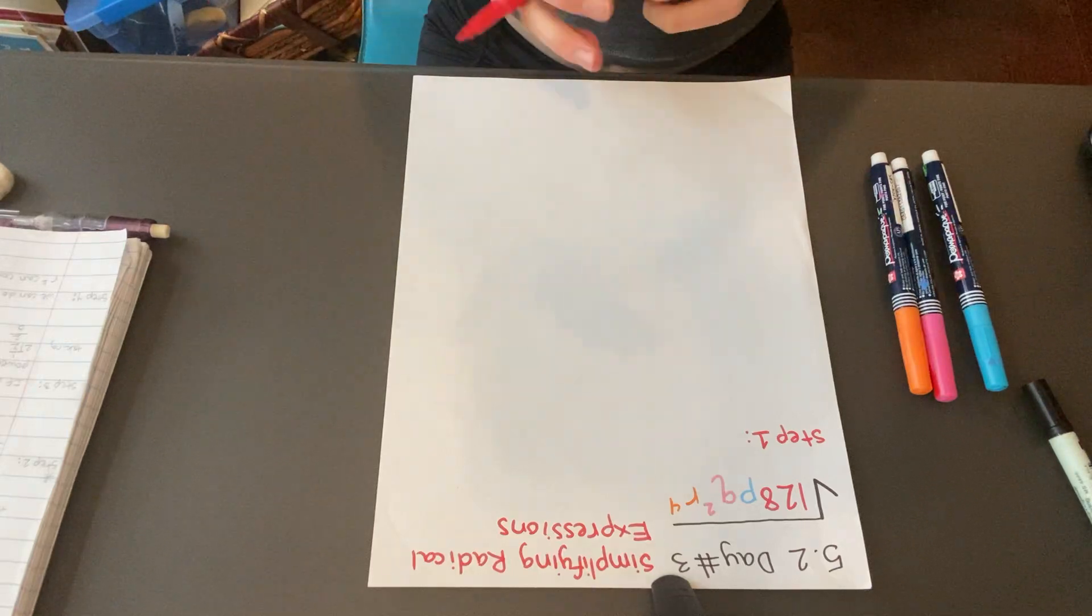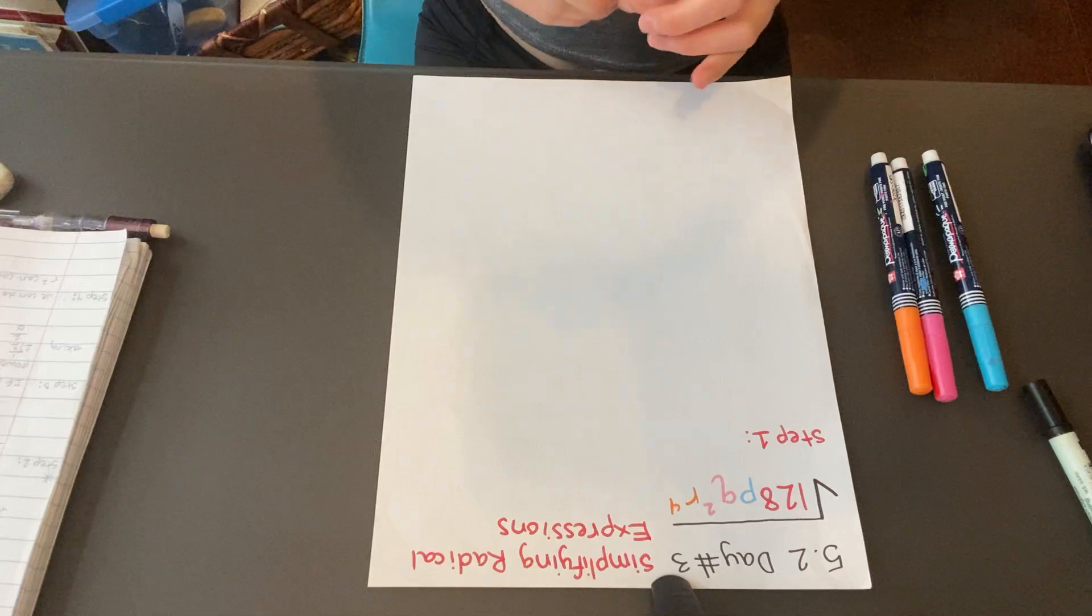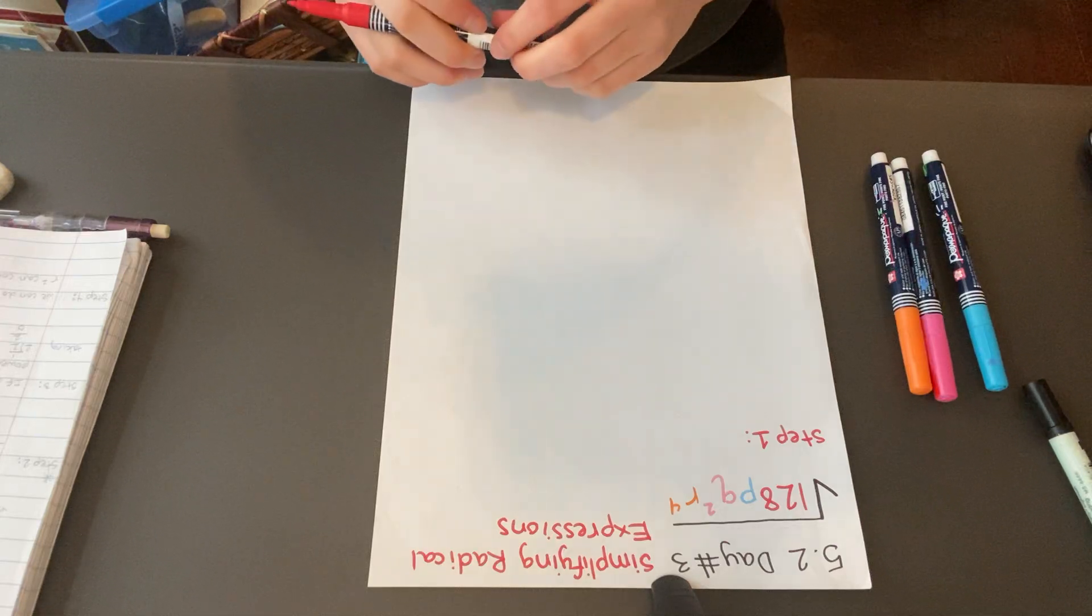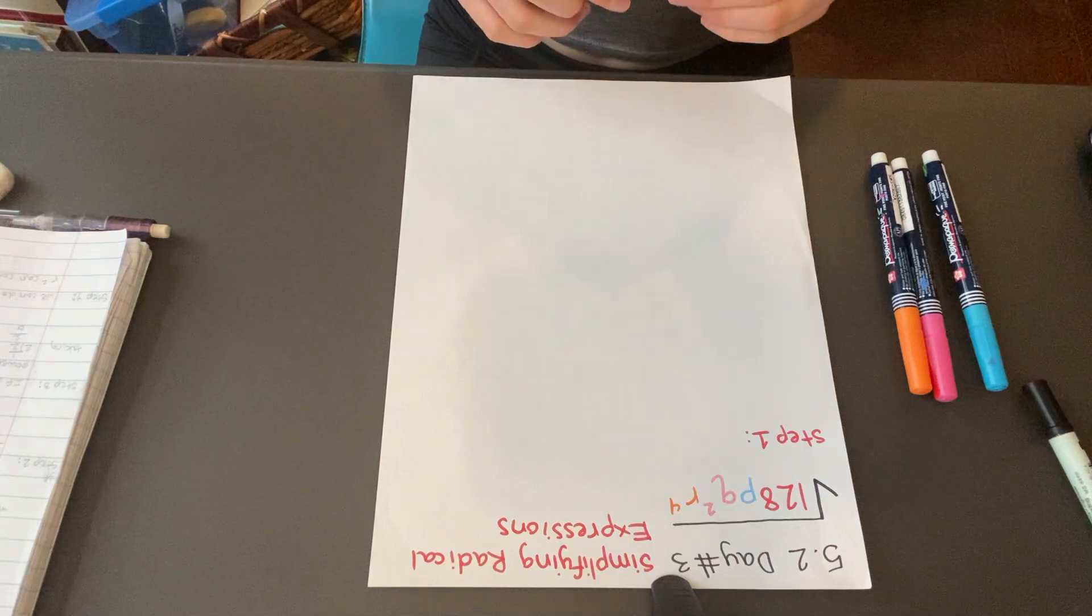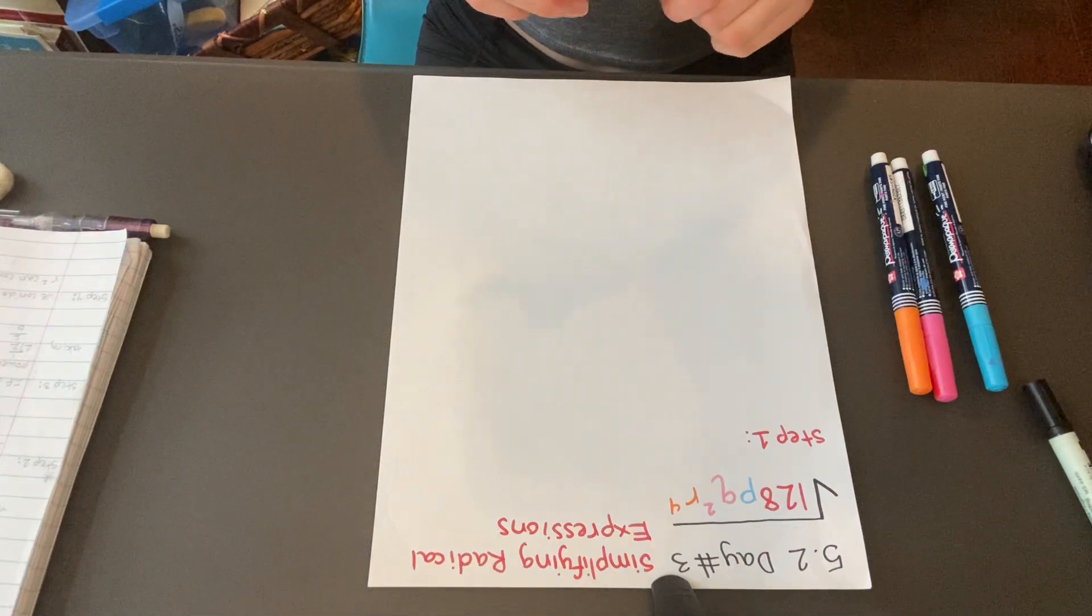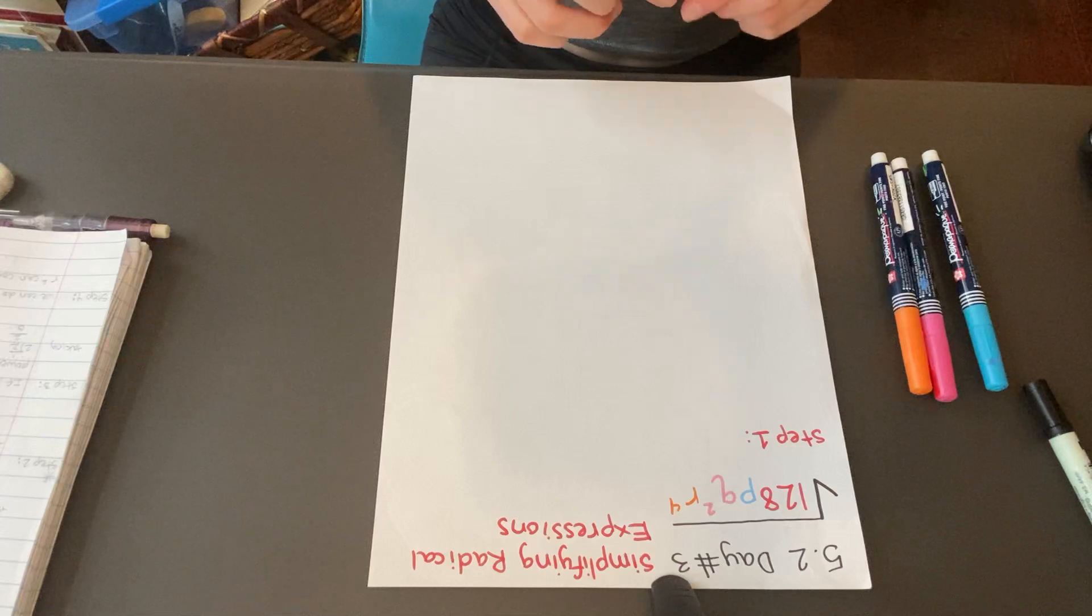The first step is we're going to simplify the radical, and how we're going to do that is we're going to make a factor tree for 128 because when you take the square root of 128, it is not a nice number, it's a decimal.